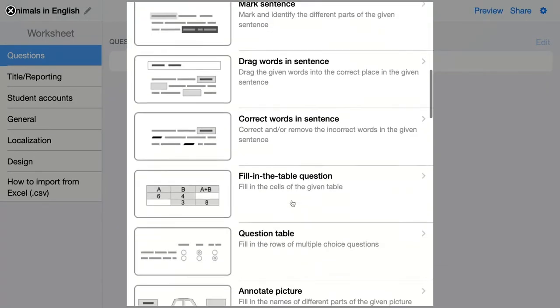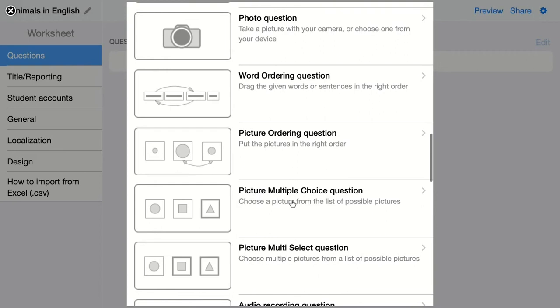The next question is the word ordering question. Here, students can order words in a sentence, but they can also order sentences in a text.